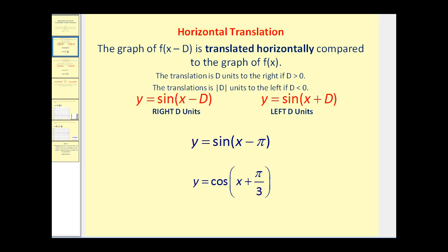The graph of f of x minus d is translated horizontally compared to the graph of f of x. Now this next part can be a little confusing. The translation is d units to the right if d is greater than zero. Notice the form is x minus d. So for example, if we're looking at y equals sine of x minus d, since it's minus a positive d, it will be right d units.